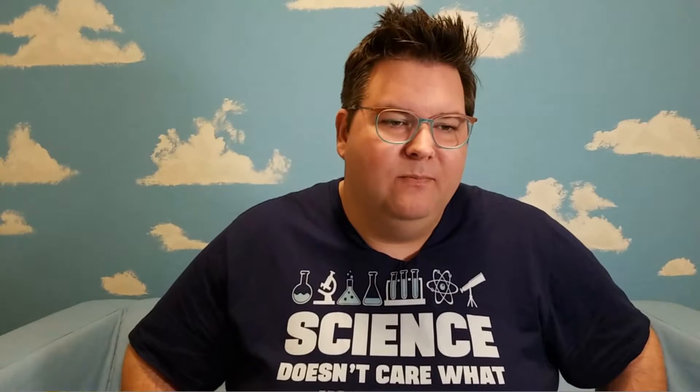This little spike of activity is called an action potential — that's when a little spike of electrical charge happens inside the cell. Now, it's not as complicated as it seems. In order to understand an action potential, you really only need to understand three things.